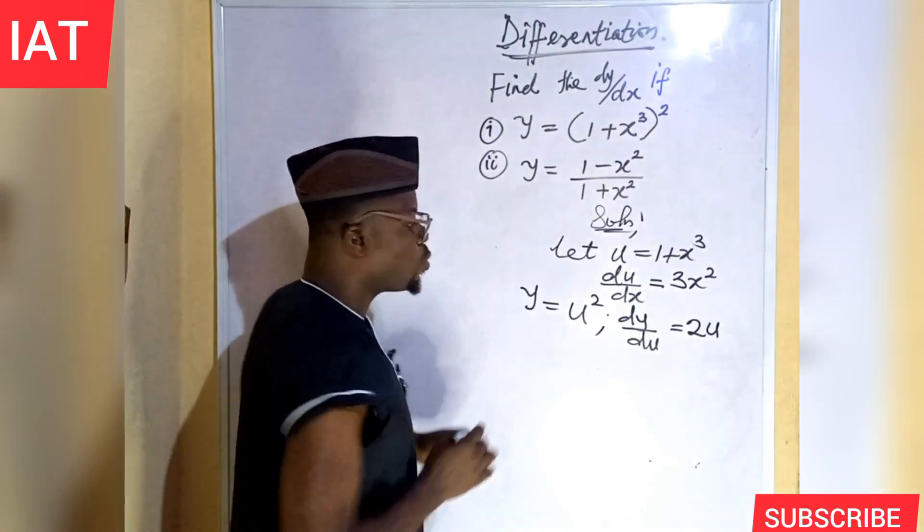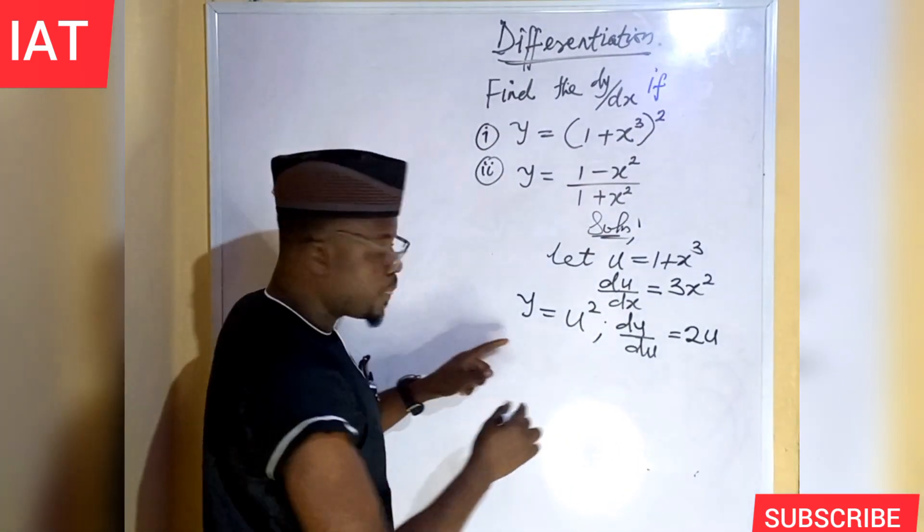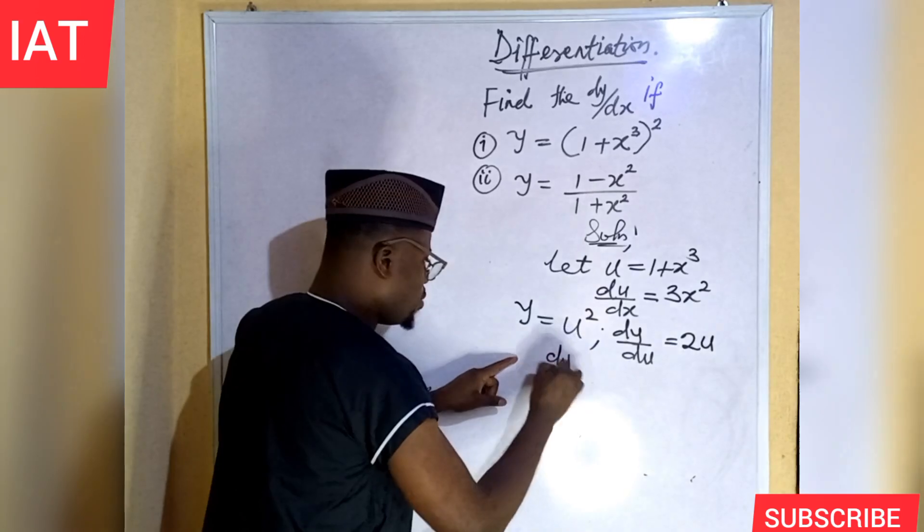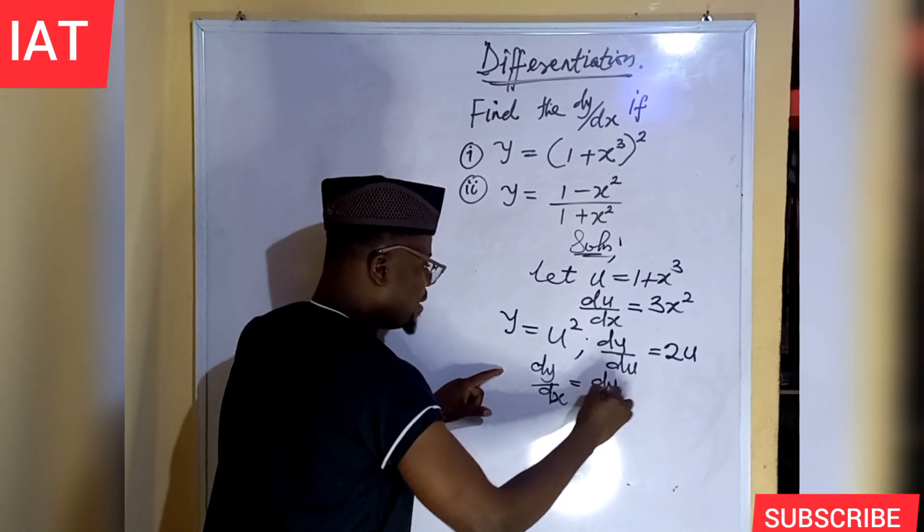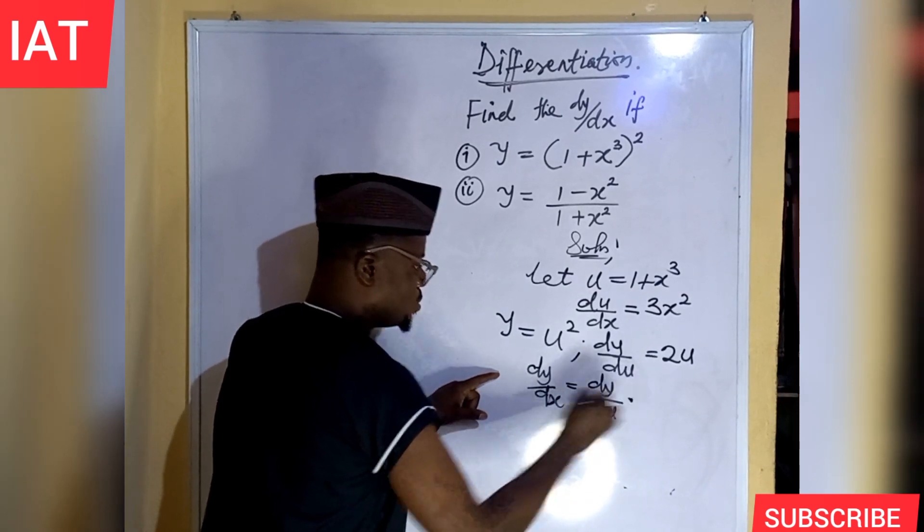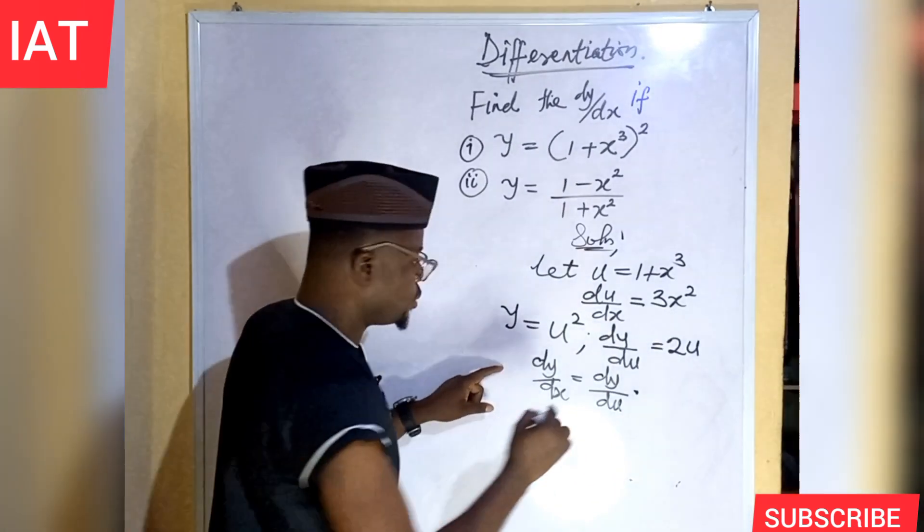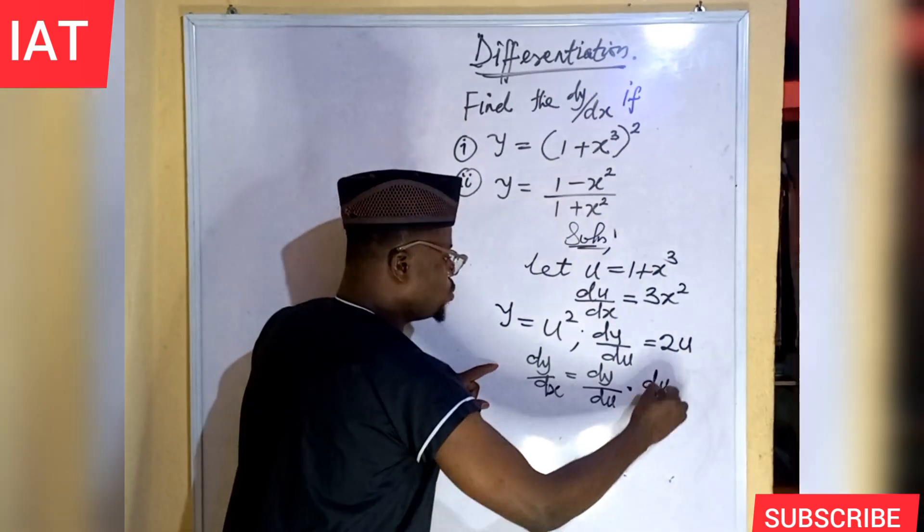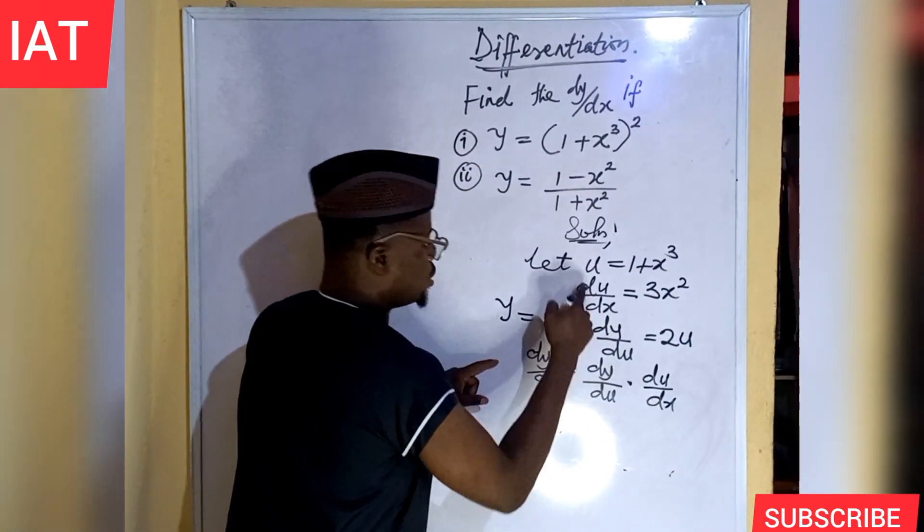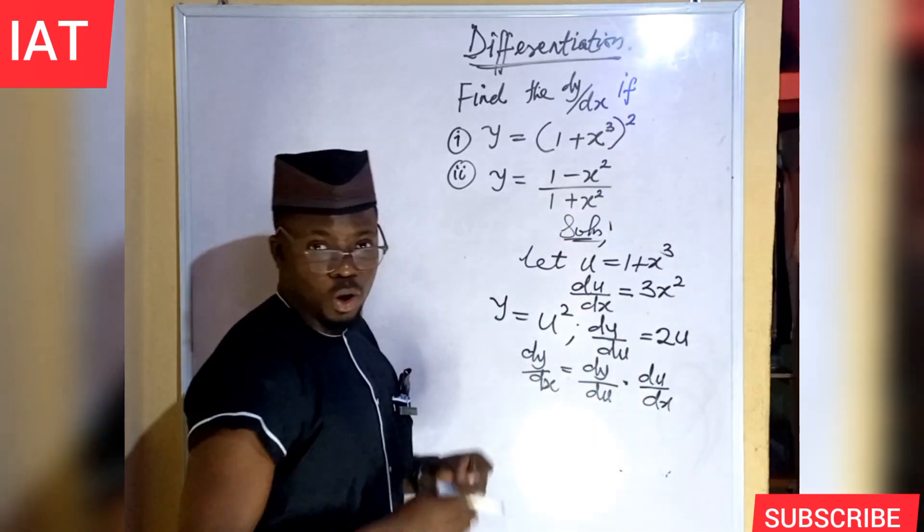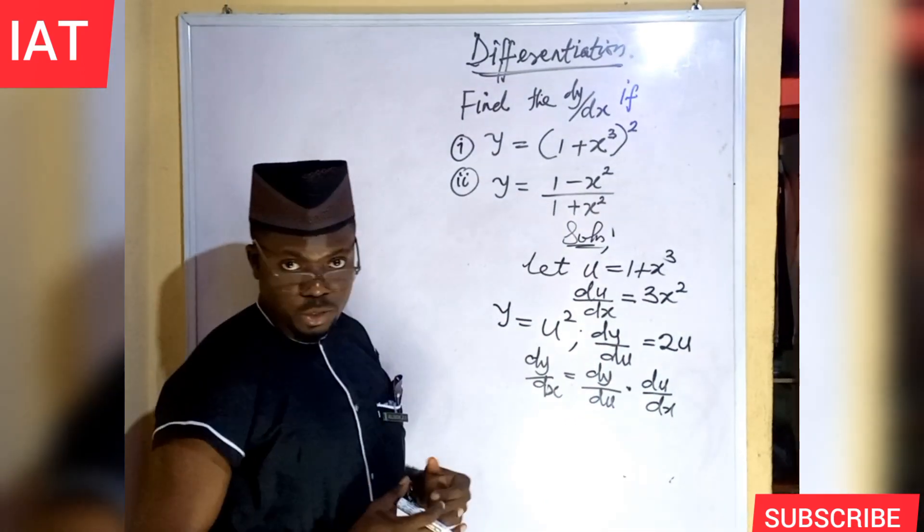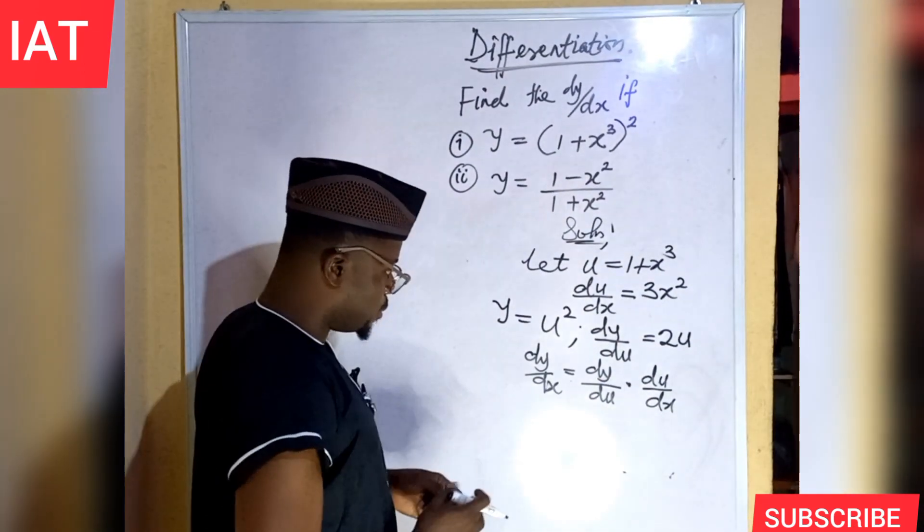What I will need to do is to quote the formula of chain rule. Remember, you are looking for dy over dx. And the formula is dy over du dot, dot signifies multiplication, dot du over dx. So what we need to do now is to substitute all the parameters we've gotten already into this expression.